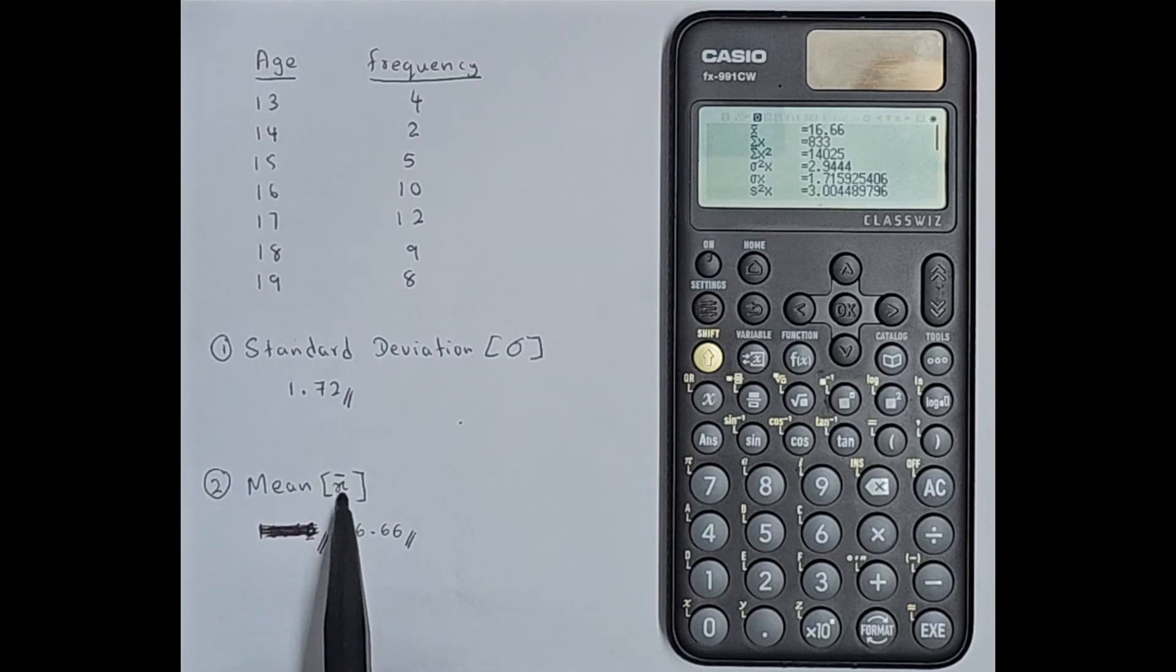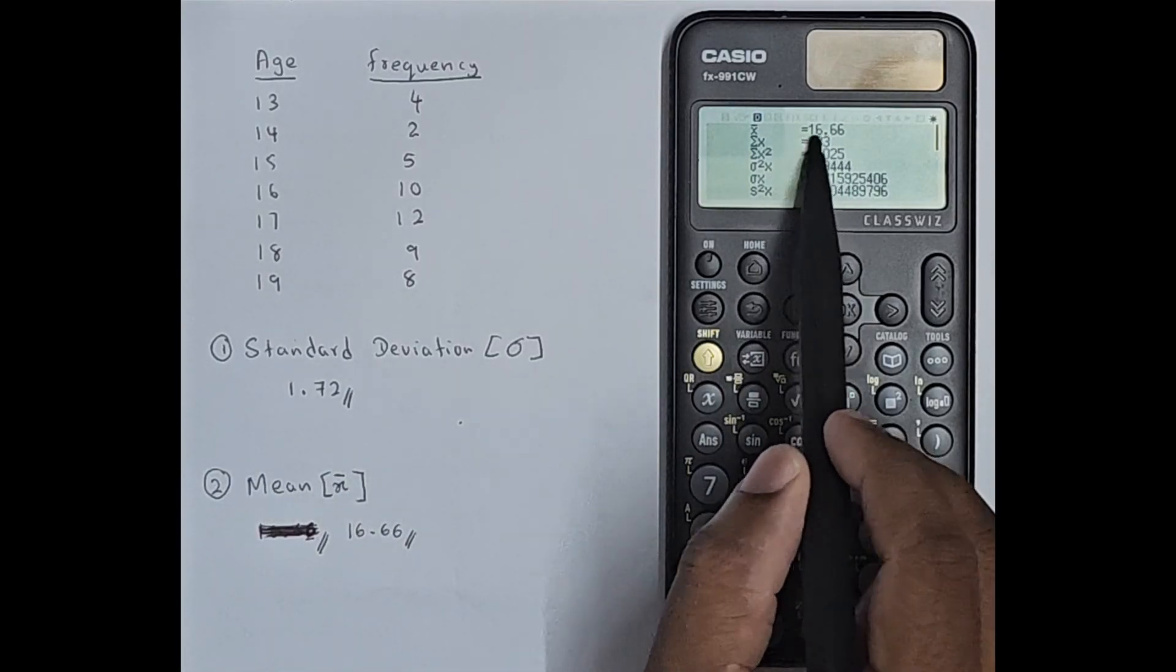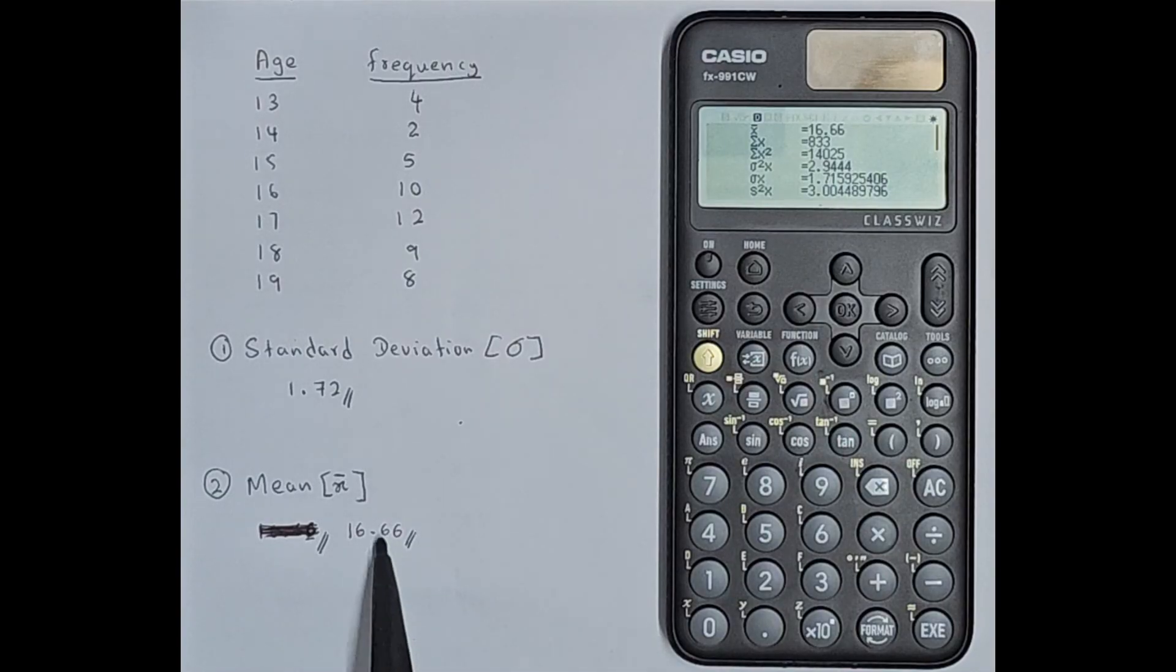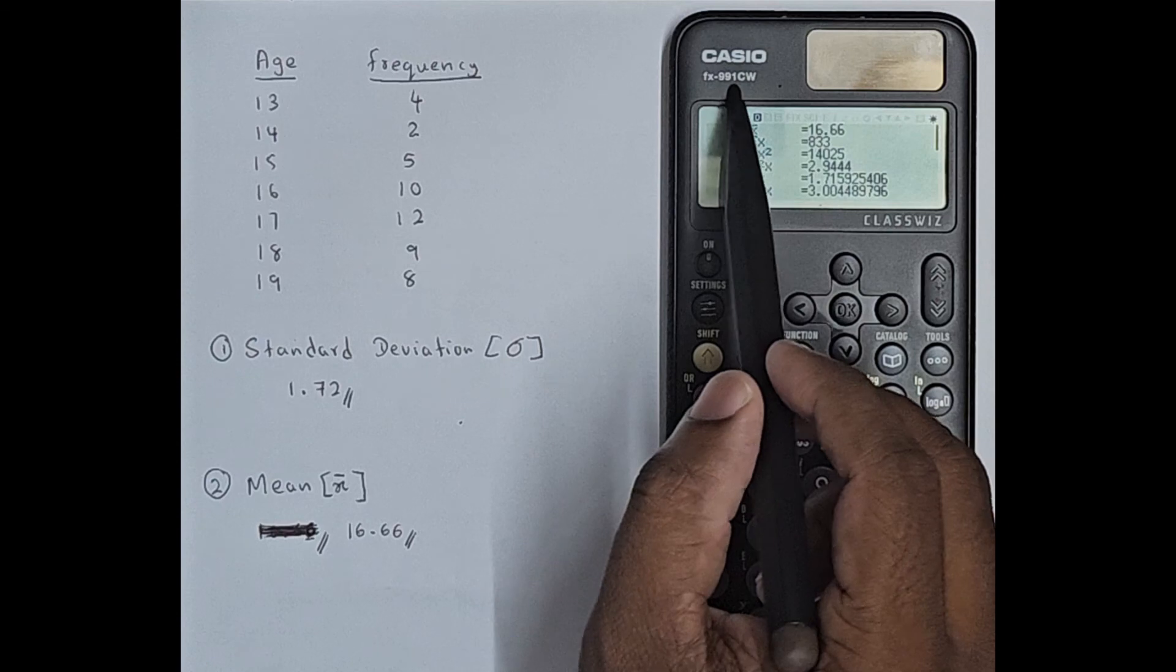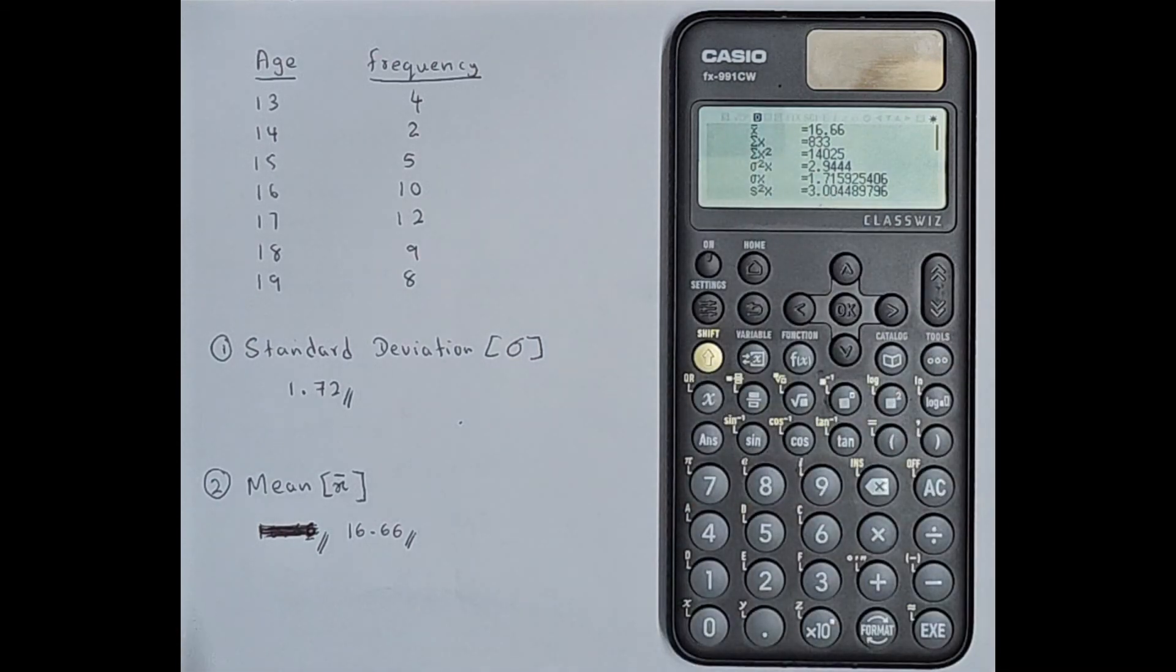The mean value you can see is x bar, the first one, 16.66. So here the mean value is 16.66. So this is how you can do a statistical calculation using the Casio FX 991CW ClassWiz calculator.